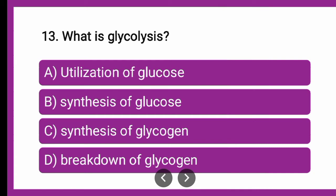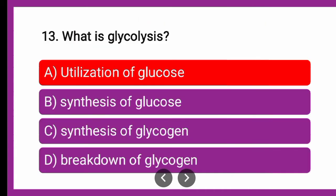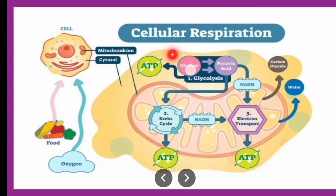Next question: What is glycolysis — whether glycolysis is utilization of glucose, synthesis of glucose, synthesis of glycogen, or breakdown of glycogen? The correct answer is utilization of glucose because here the glucose is getting utilized and consumed to form pyruvic acid or pyruvate, which is further continued into the Krebs cycle.